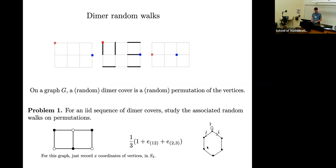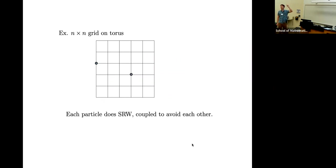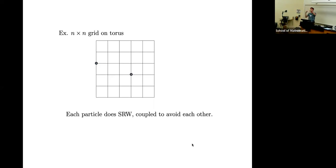The problem is to analyze it for a more general graph. For example, if my graph is regular — like an n-by-n grid on a torus — then each particle is just doing a simple random walk, because the probability that it gets matched to any one of its four neighbors is the same, one-fourth, just by symmetry. But all the particles are coupled in such a way to avoid each other. It's an interesting problem to analyze the trajectories: how quickly does it mix, and how do they braid with each other? These kinds of problems are all very interesting from a probabilistic or stat-mech point of view.